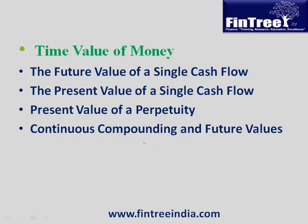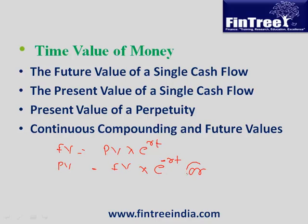For continuous compounding, future value equals present value multiplied by e raised to rt, where r is the interest rate and t is the time period. Conversely, present value equals future value multiplied by e raised to negative rt, which is the same as future value divided by e raised to rt.